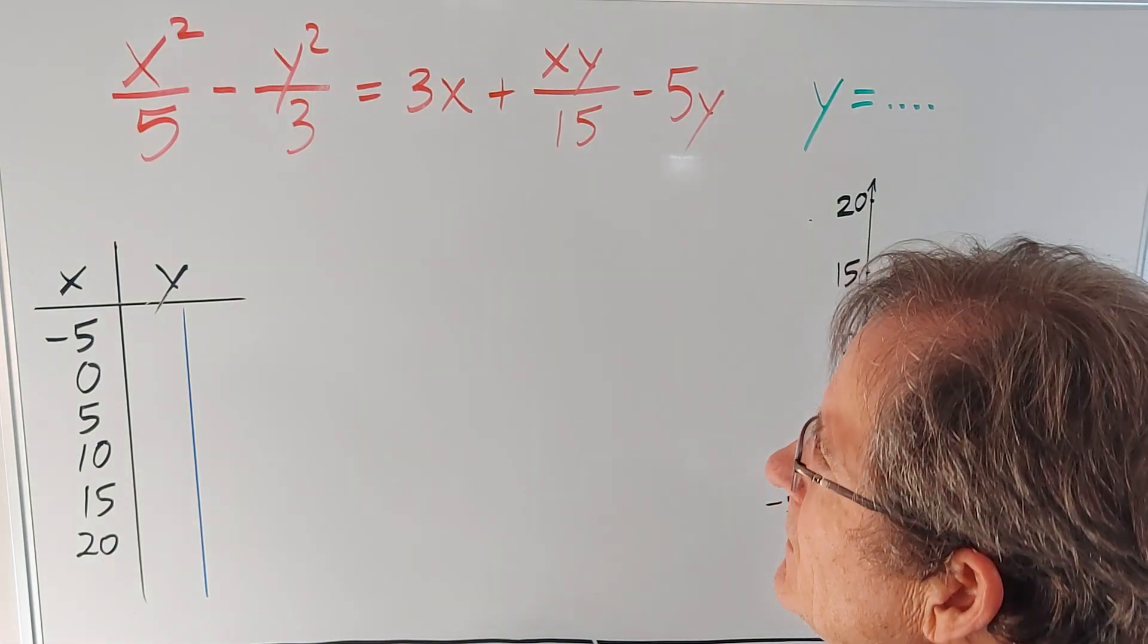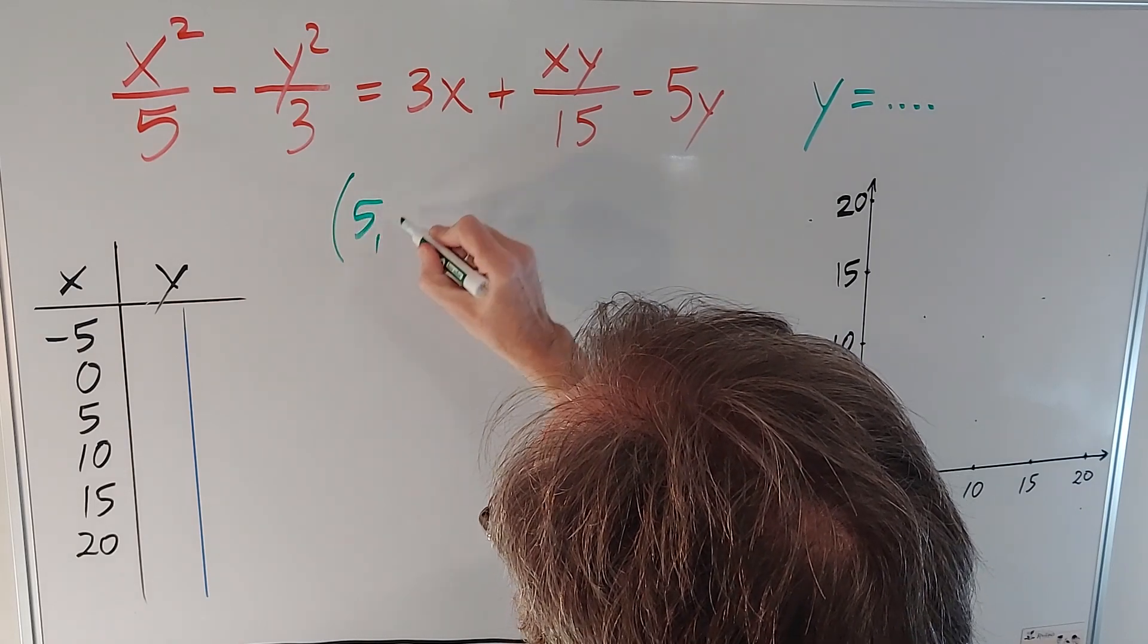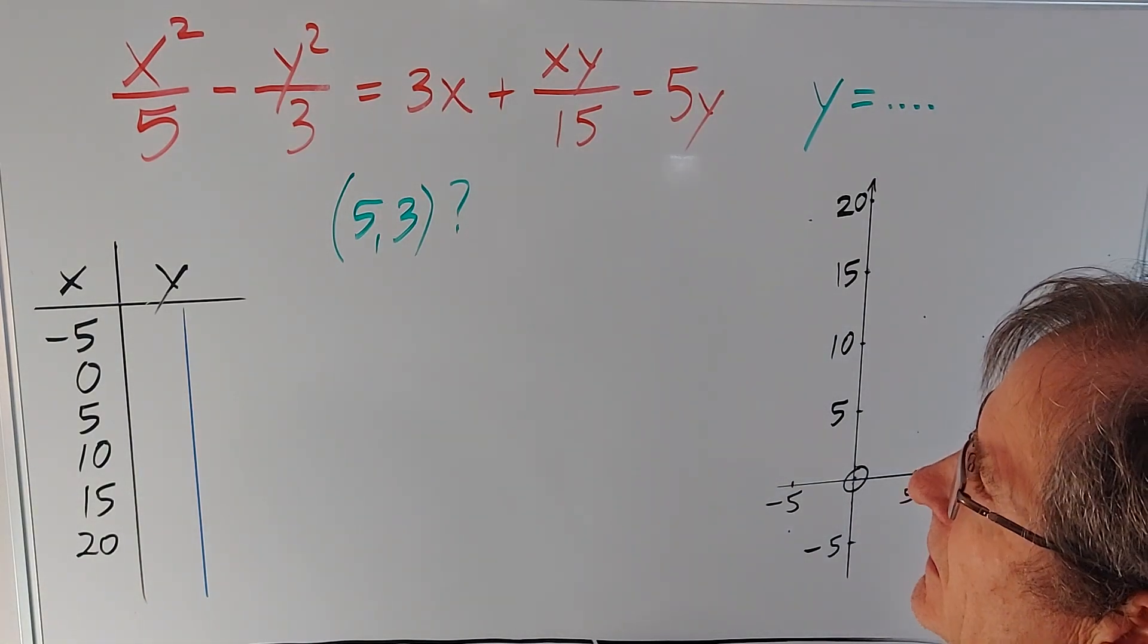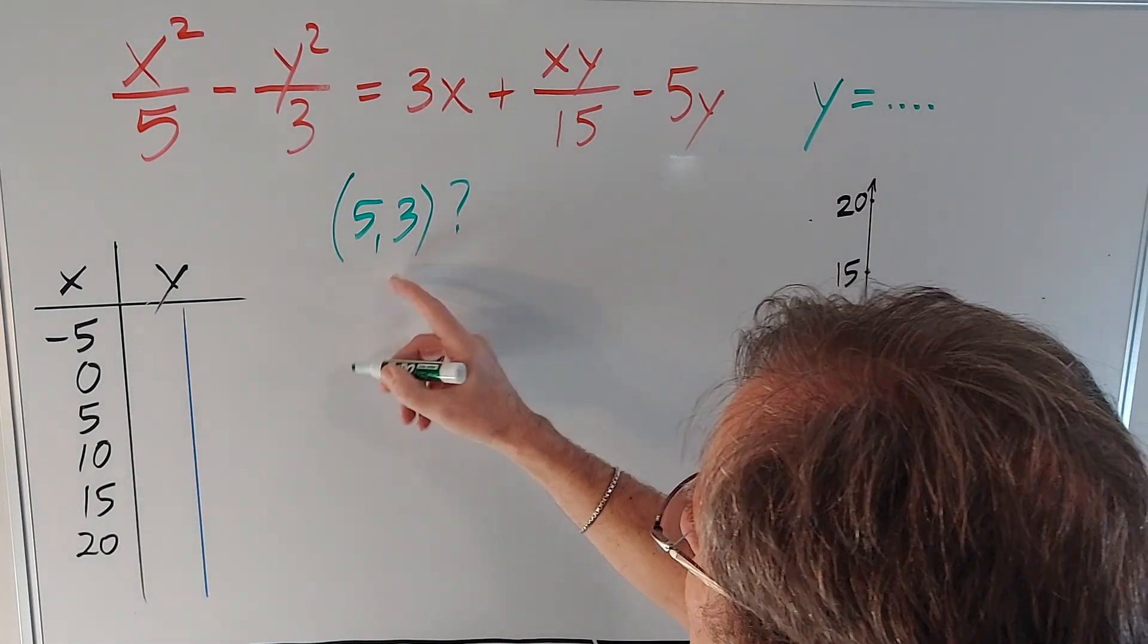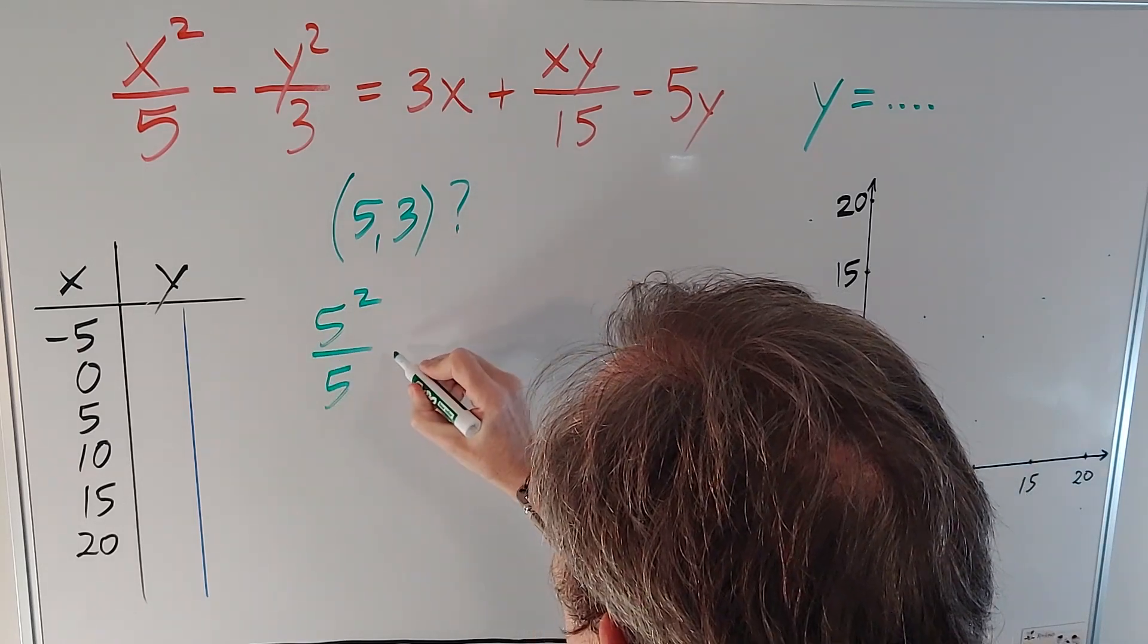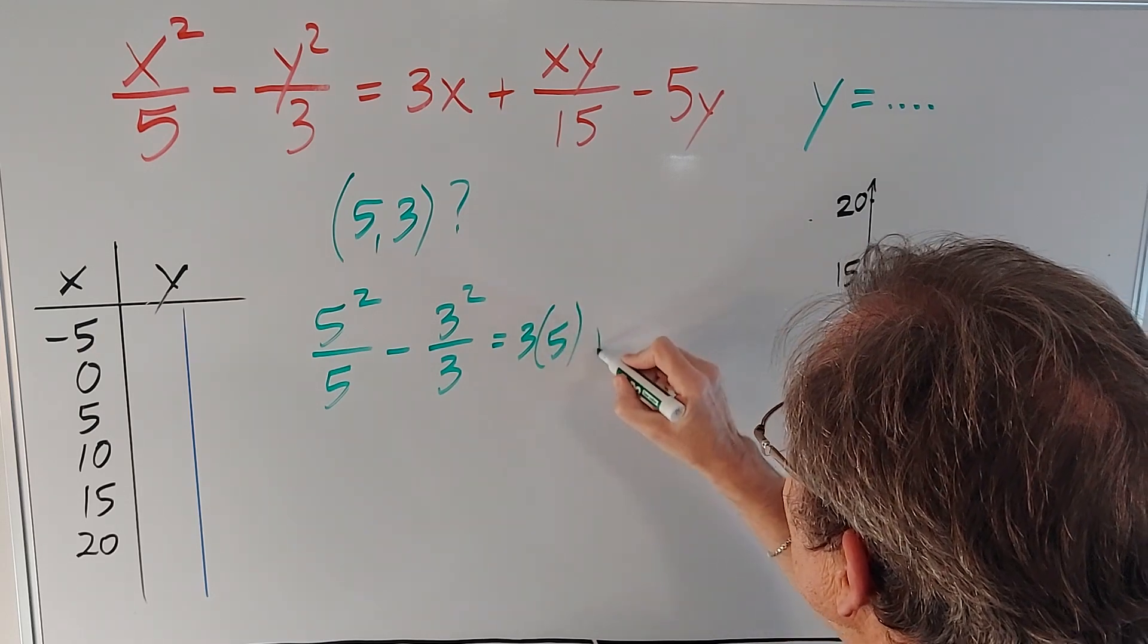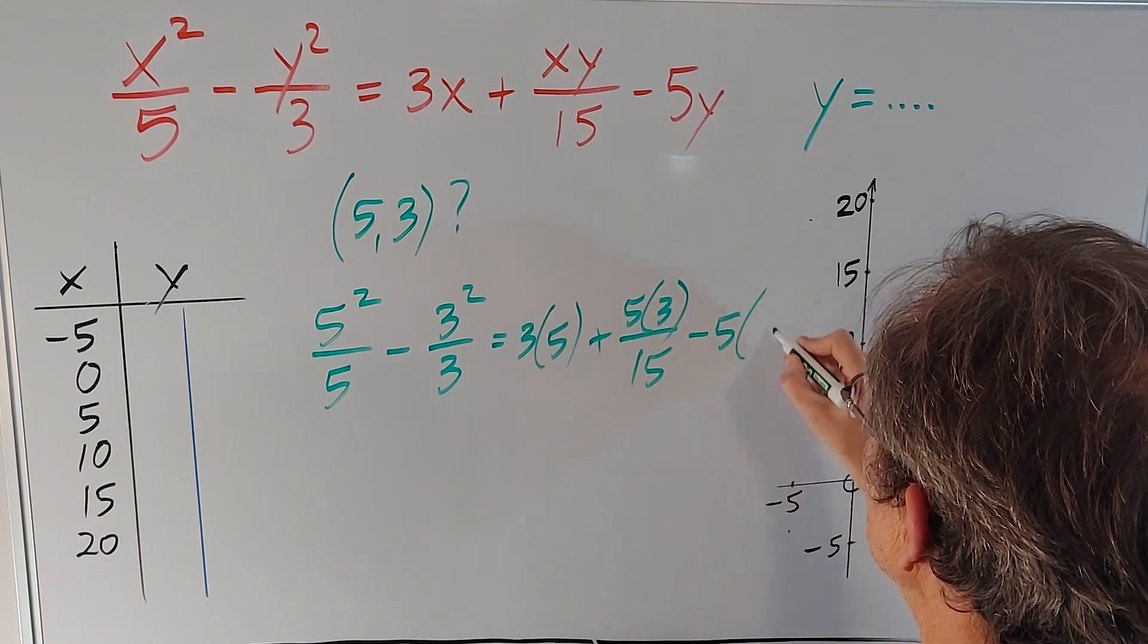The first thing you might want to answer is a question like this. Is the point (5,3) on that hyperbola? How would we figure that out? That's right, see if it satisfies the equation. So if I plug in (5,3) I'm going to get x²/5 - y²/3 = 3x + xy/15 - 5y.